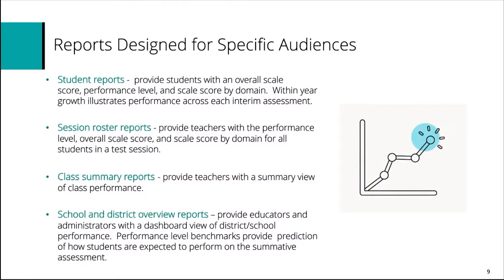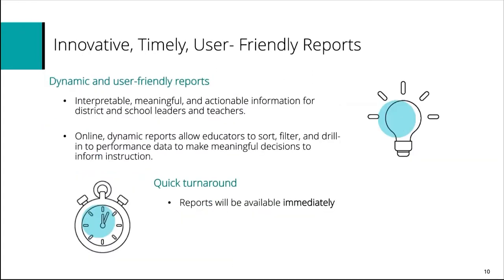There are essentially four different reports. The student report shows how individual students perform. The session roster report lets you look at how a whole classroom performed. The class summary report shows the average class performance. And there are school and district reports. All reports are dynamic — for example, in a session roster report you can see the overall math scale score and each domain scale score, then sort by highest to lowest scale score for any domain you choose.